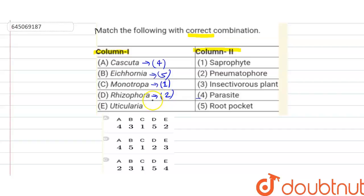Next one is Utricularia. This one is an insectivorous plant that uptakes insects for their nutrient needs. So its correct match is, for E, correct match is three from column two.